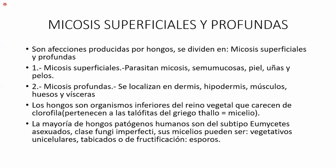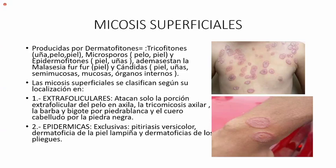¿Qué son los hongos? Son organismos inferiores del reino vegetal que carecen de clorofila. Pertenecen a las talófitas; del griego, tallo quiere decir micelio. Los micelios son fibritas con cuerpos y esporos. Los hongos patógenos humanos son del subtipo eumicetes, asexuados, o sea que no necesitan pareja. Sus micelios pueden ser vegetativos, unicelulares, tabicados o de fructificación; estos últimos tienen los esporos, que son como sus huevos y así se multiplican los hongos.